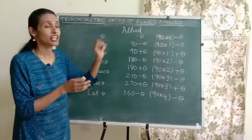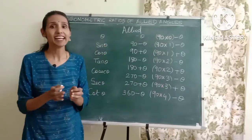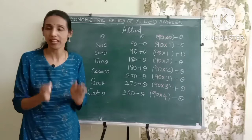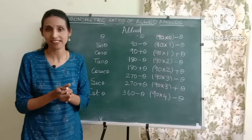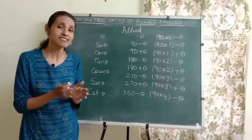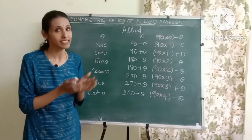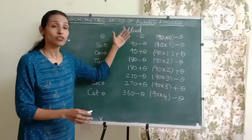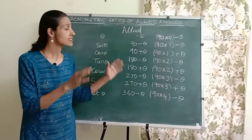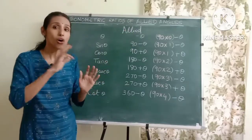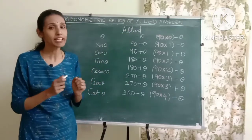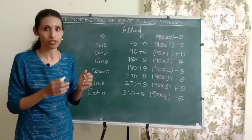That's why they are known as allied angles. The word 'allied' means something which has similar nature or behavior — so the trigonometric ratios of these angles are very similar to that of theta. The concept is very easy to understand. Let's see how to find these trigonometric ratios. These angles lie across all four quadrants, so let's quickly draw the four quadrants.